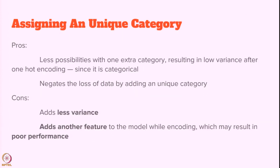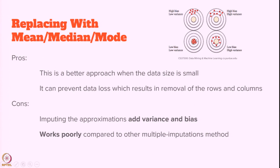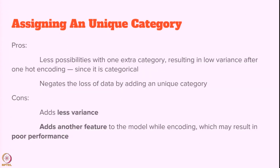Assigning a unique category actually brings less variance, which is a merit — it negates the loss of data by adding a unique category. The demerit is that adding one more column through one hot encoding adds another feature to the model, which may result in poor performance. This will be connected back when we discuss one hot encoding in detail in the multimodal learning analytics lecture.